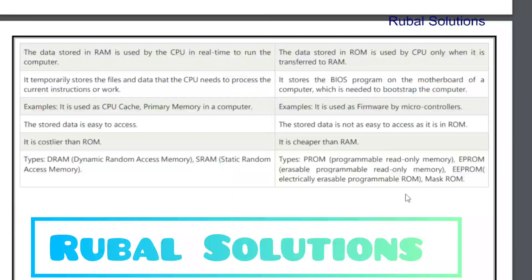Examples — RAM: It is used as CPU cache memory in a computer. ROM: It is used as firmware by microcontrollers. The stored data in RAM is easy to access. The stored data in ROM is not easy to access. RAM is costlier than ROM. ROM is cheaper than RAM.